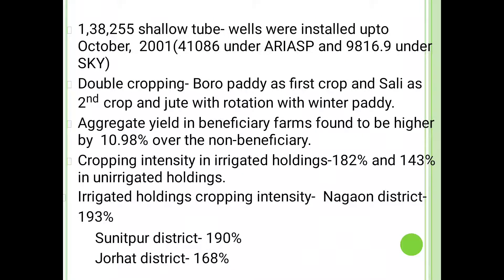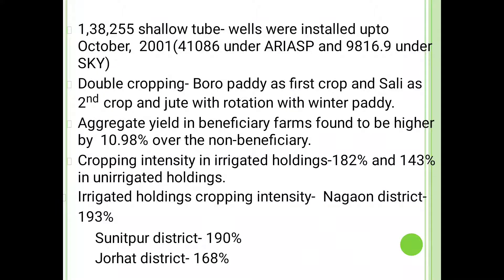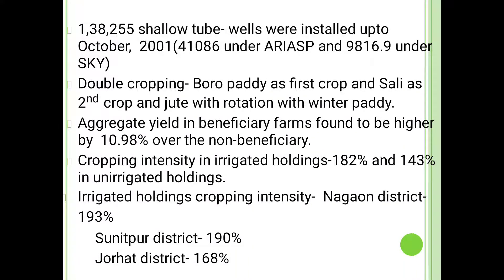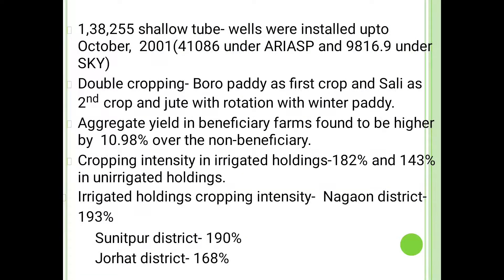38,255 STWs were installed up to October 2001 — 41,086 under ARIASP and 9,800 under SKY. Double cropping: boro paddy as first crop and sunni as second crop, and jute in rotation with winter paddy. Aggregate yield in beneficiary farms found to be higher by 10.98% over non-beneficiary farms. Cropping intensity in irrigated holdings: 182% versus 143% in unirrigated holdings. Irrigated holdings cropping intensity: Nagaon district 193%, Sonitpur district 190%, and Jorhat district 168%.